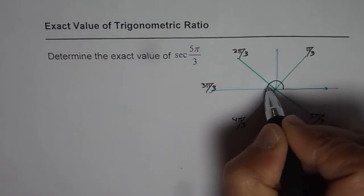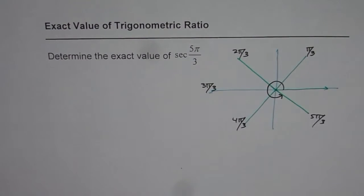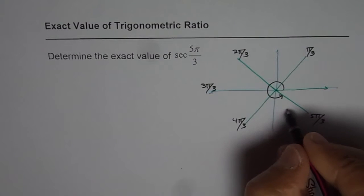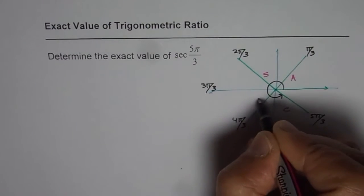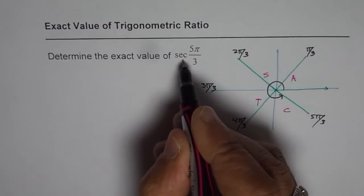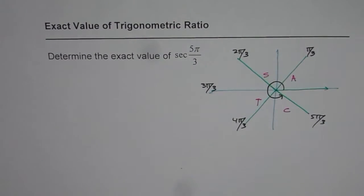So we are in quadrant 4 and if you apply the cos rule then we know cos is positive in quadrant 4. So secant 5 pi by 3 is going to be positive.